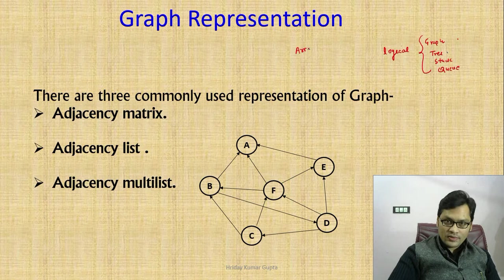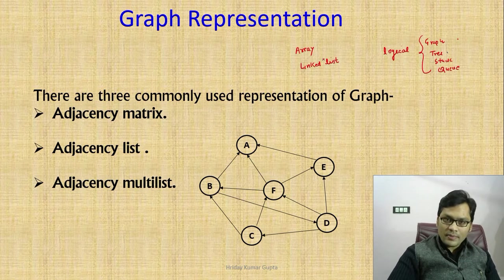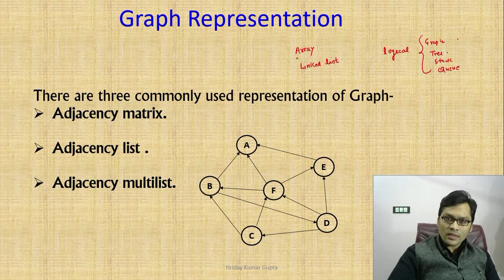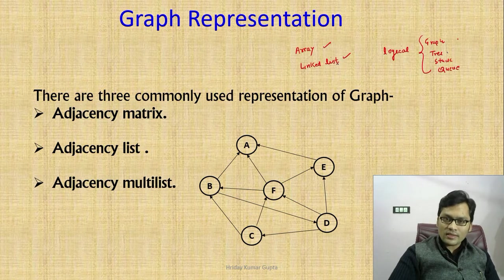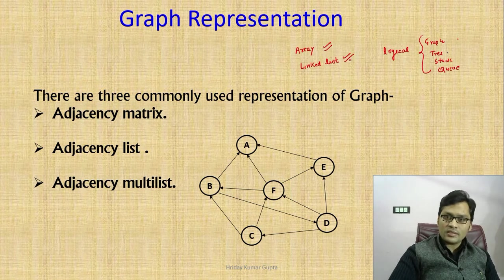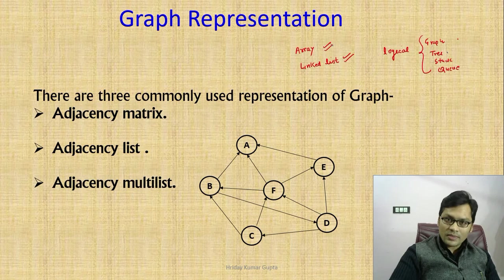Those physical data structures are array and linked list. Just like we saw with trees — tree had array representation and linked representation. Stack also had array and linked list representation, queue also had array and linked list representation. It means each and every logical data structure will be represented by a physical data structure.